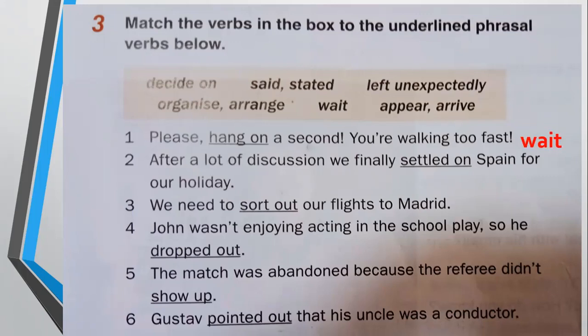After a lot of discussion, we finally settled on Spain. So Spain is the object, making 'settled on' a transitive phrasal verb that means 'decided on' — decided on Spain for our holiday. Next, 'we need to sort out our flights.' What do you mean by 'sort out'? It means to organize or arrange. Where is the object here? Our flights — so it is a transitive phrasal verb.